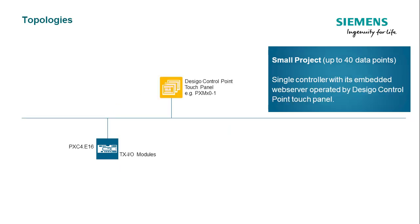When needed, a small topology can also include a DSEGO control point touch panel for operating the data points via the embedded web server of the controller.